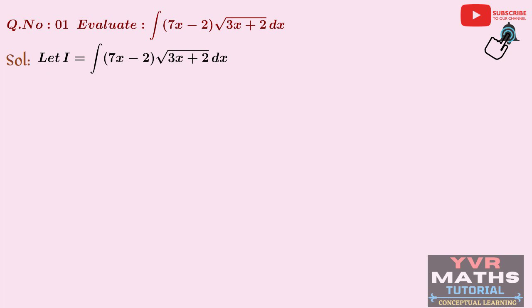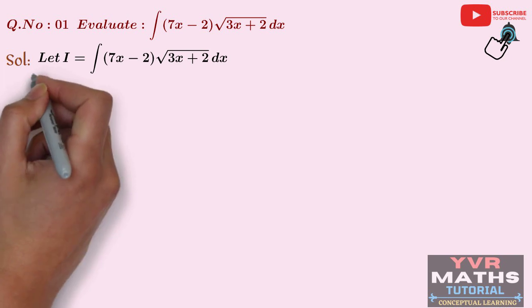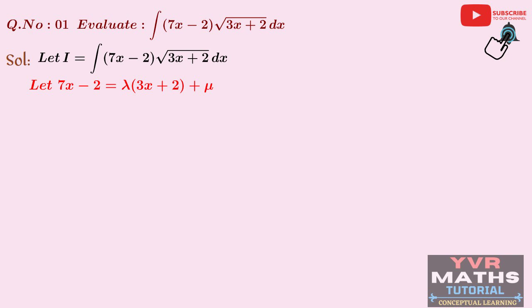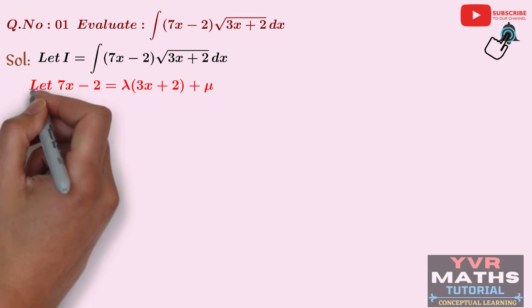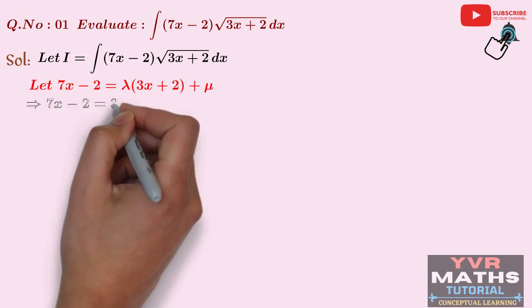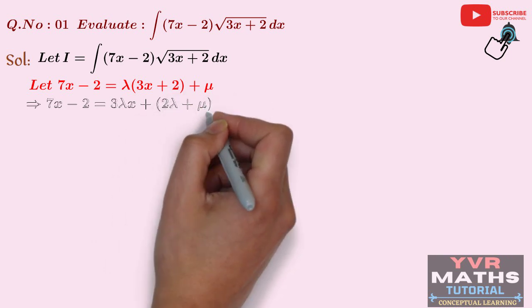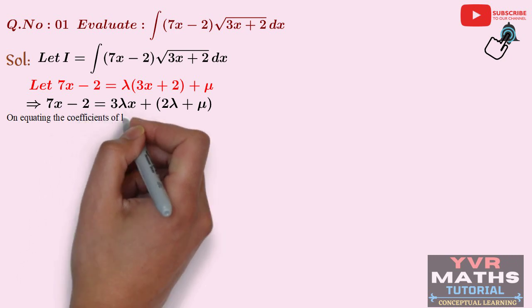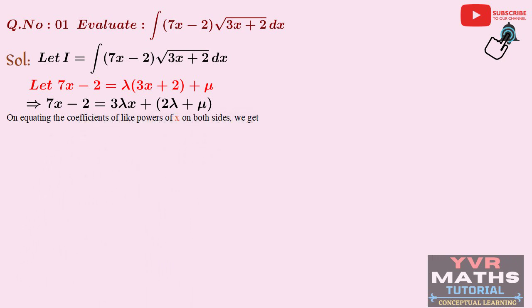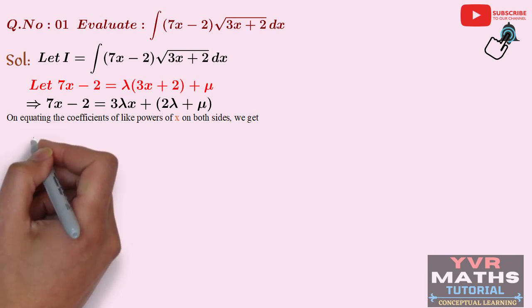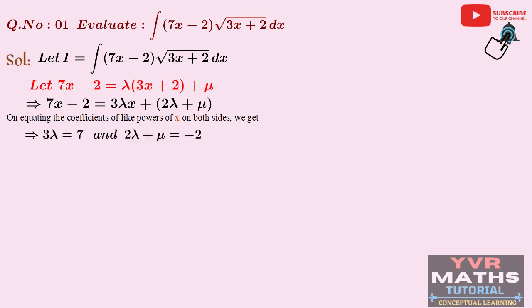As discussed in the algorithm, AX + B is written in terms of CX + D: AX + B = λ(CX + D) + μ. So let 7x − 2 = λ(3x + 2) + μ. Multiplying out the right side: 7x − 2 = 3λx + 2λ + μ. Equating coefficients of like powers of x on both sides: coefficient of x gives 3λ = 7, and the constant term gives 2λ + μ = −2.